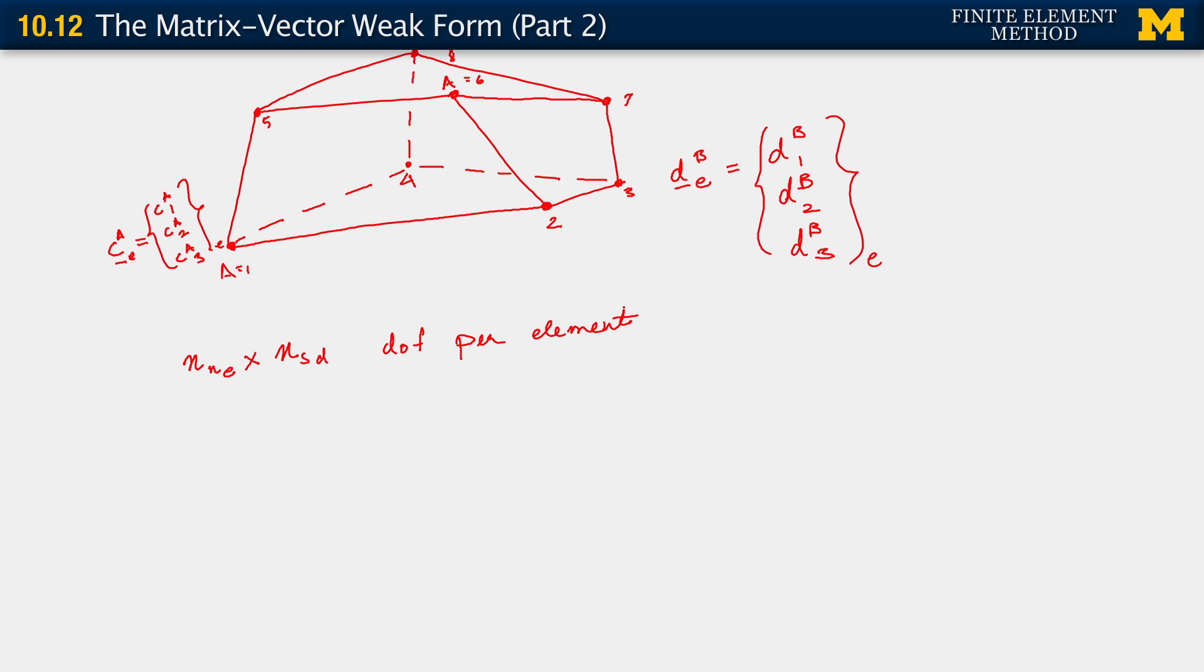So if this is the case, what it tells us is that we can actually write a C_E vector, which we can define as basically being C_1E - now note, C_1E is a vector, it's a three vector. It is the set, it's this vector for A equals 1. And so on, C_2E to C number of nodes in the element E.